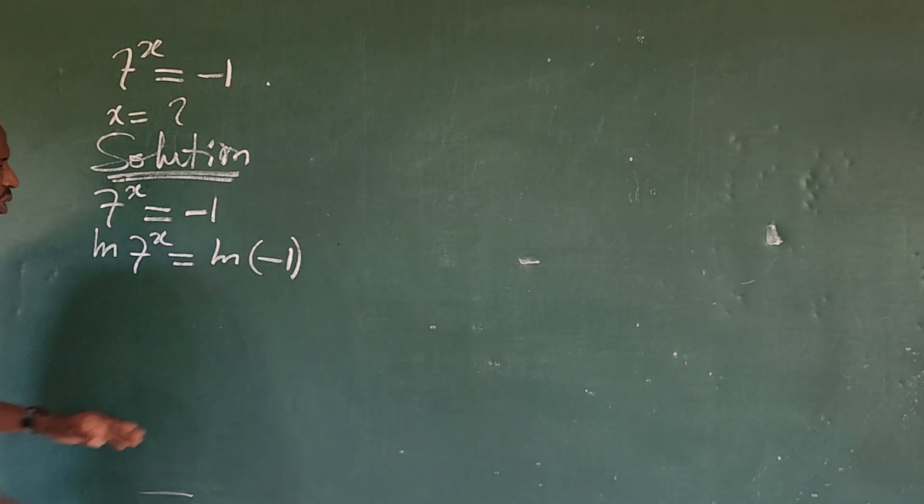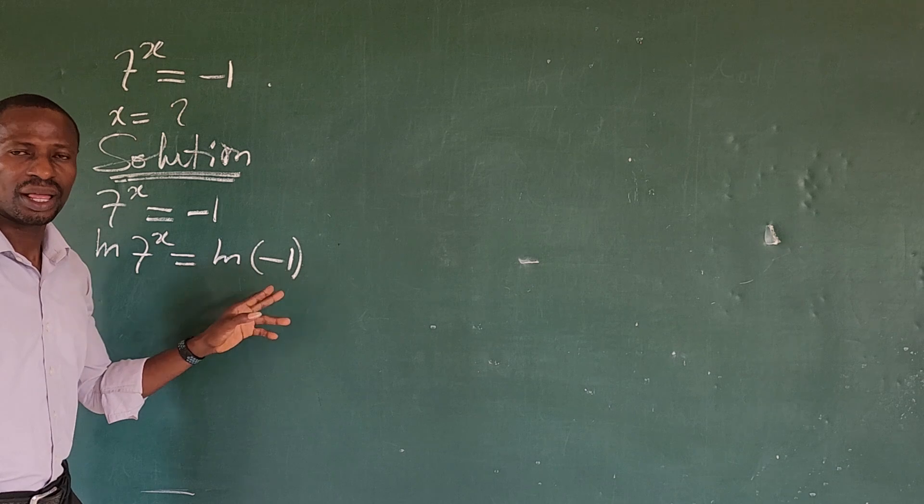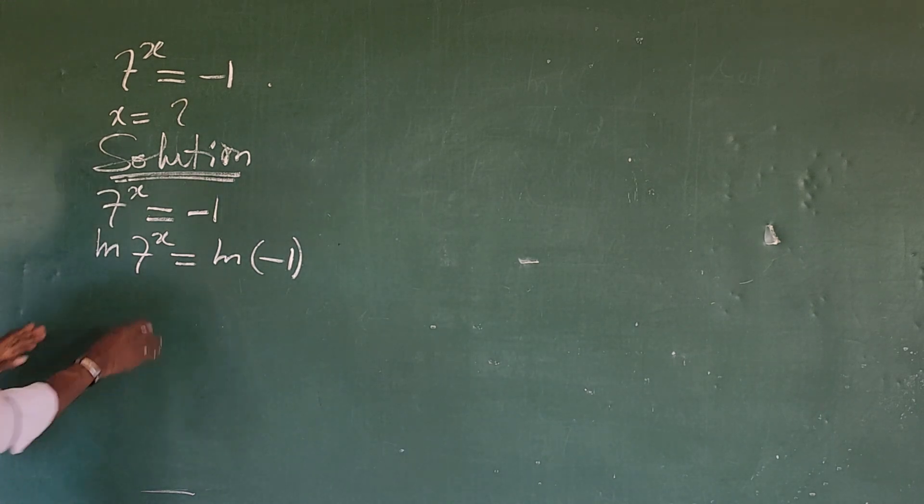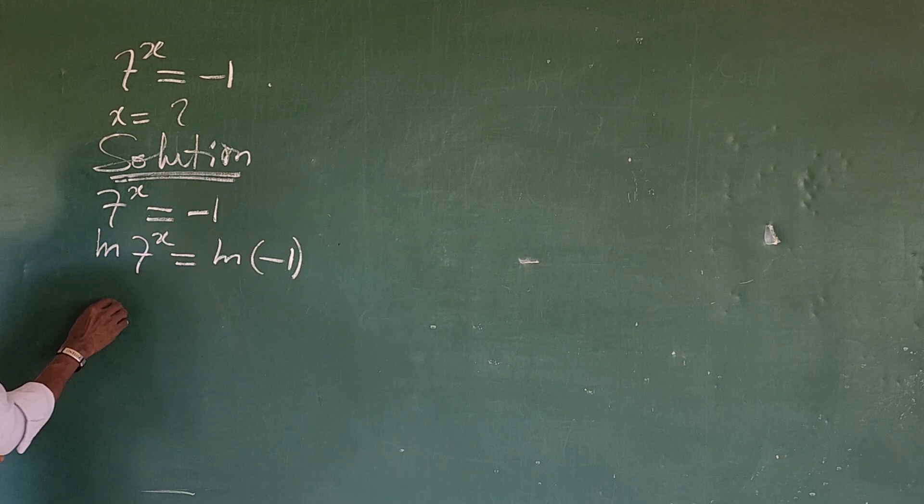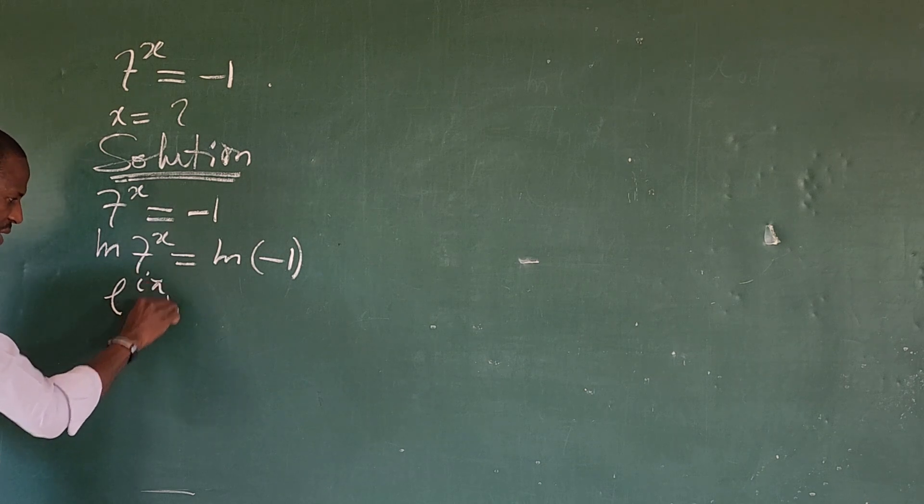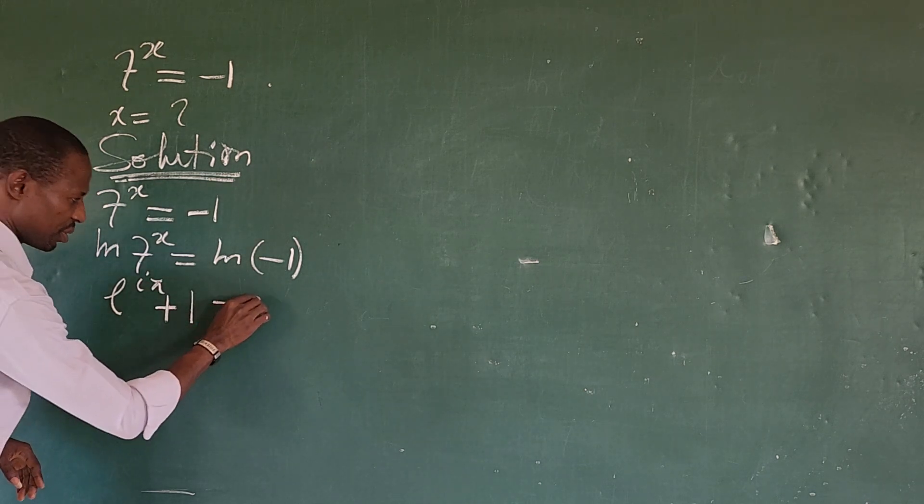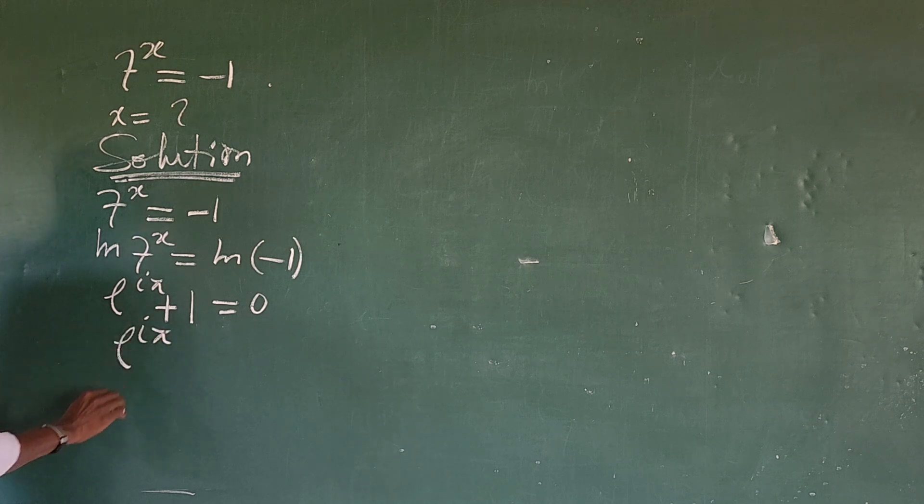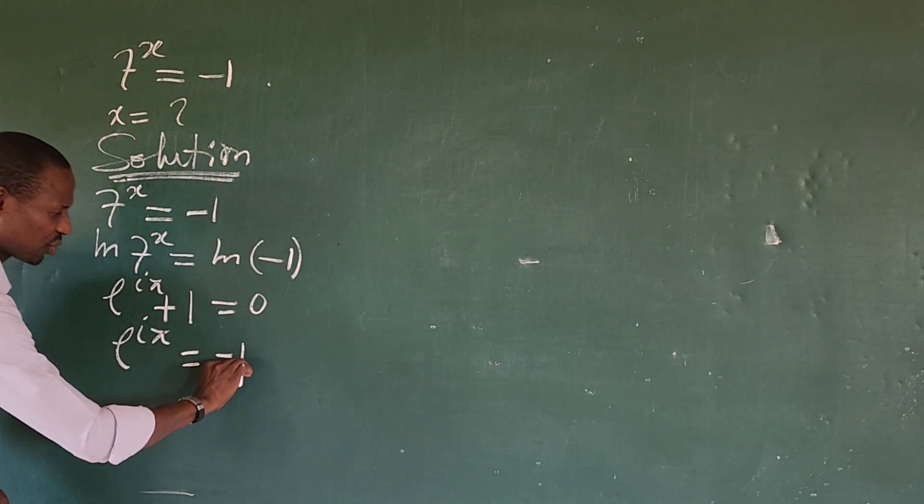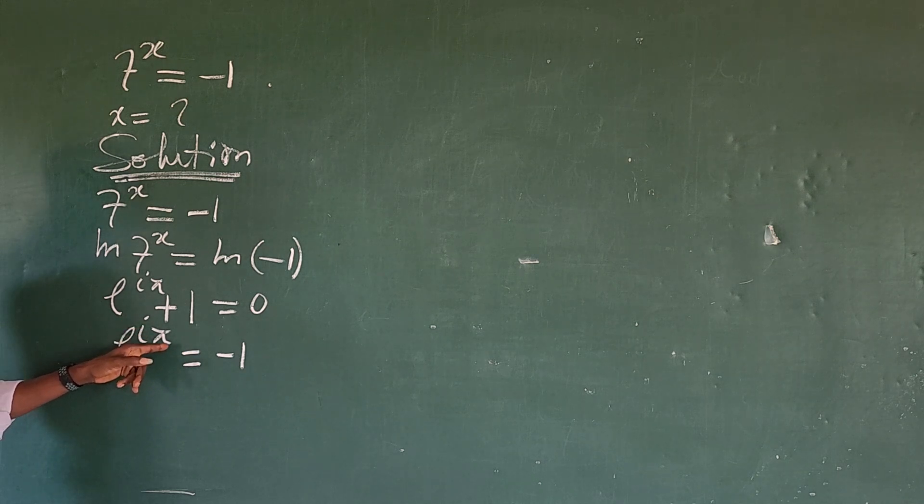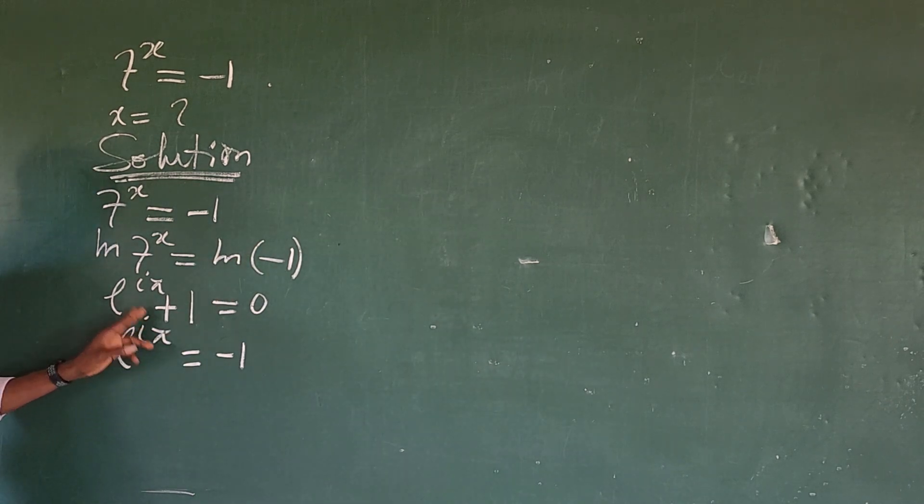So you know that ln of minus 1 does not exist. So how do we solve this? If you remember Euler identity, Euler identity says that E to the power of iota pi, plus 1 is equal to 0. So if I move this one to this side, I'm going to have E to the power of i times pi equal to minus 1. So from this Euler identity, we discover that minus 1 is equal to E to the power of iota pi. So we can replace this place here with what we have here.